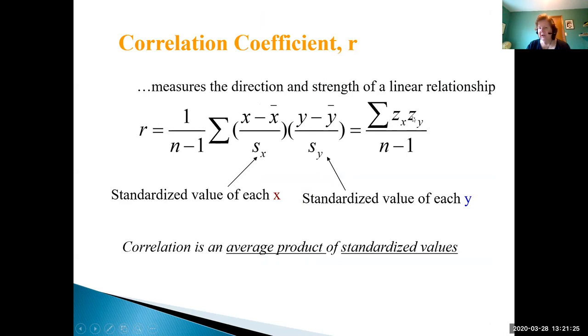So those are our standardized values. Then we're dividing by n minus one after we summed all those up, those multiplications. That's where we get the average. For us, we're going to be lucky. We can get our correlation value or correlation coefficient r right off our calculators or from Excel.